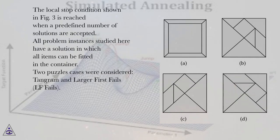The local stop condition shown in Figure 3 is reached when a predefined number of solutions are accepted. All problem instances studied here have a solution in which all items can be fitted in the container.